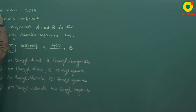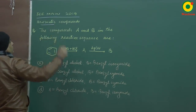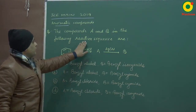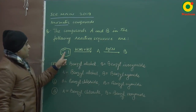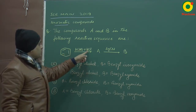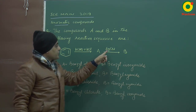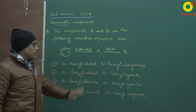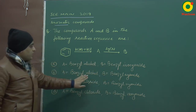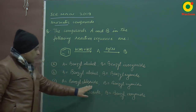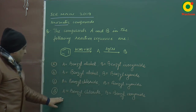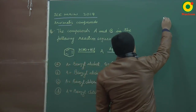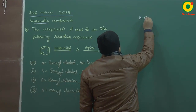JEE Mail 2019 - Aromatic Compound problem. Compounds A and B in the following reaction sequence: Benzene on reaction with formaldehyde plus HCl gives A. A on reaction with AgCN gives B. Options are: (C) A = benzyl chloride, B = benzyl cyanide; (D) A = benzyl chloride, B = benzyl isocyanide. Let's analyze: if HCHO reacts with HCl...